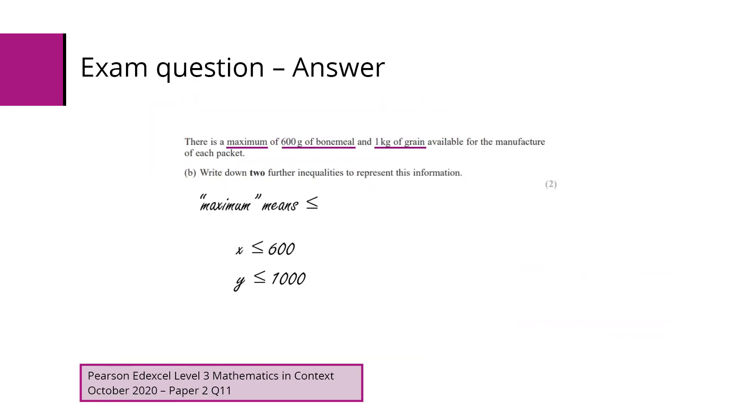For part B we know we must have a maximum. That means it must be less than or equal to. Again, x stands for the number of grams, so we must have 600 grams of bone meal. So x must be less than or equal to 600 and y we must change that one kilogram to grams so y must be less than or equal to 1000.